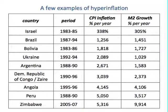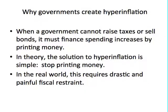Some examples of hyperinflation: Zimbabwe had a period of hyperinflation over 2005 to 2007 — the CPI inflation for a year was 5,360% per year, which is horrible. The money supply growth was very high too. We know that money supply growth and inflation rate are correlated — if money supply growth is higher, inflation rate is higher too. When a government cannot raise taxes or sell bonds, it must finance spending by printing money.